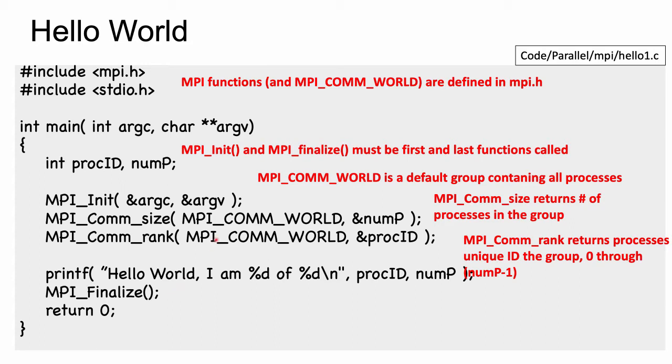I haven't mentioned MPI_COMM_WORLD. That's a default group container. When we run MPI, we're able to create groups of processes that communicate amongst each other and ignore the other groups. I'm just going to have every process communicating. So everybody is part of the MPI_COMM_WORLD group.